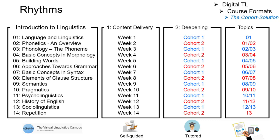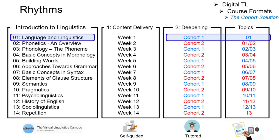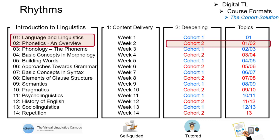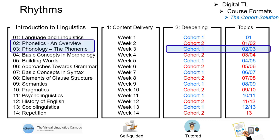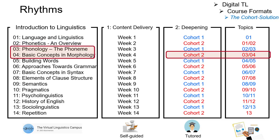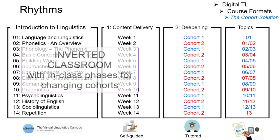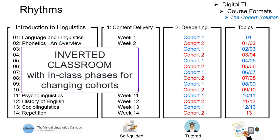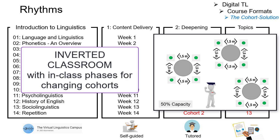For example, in week 1 for the first cohort, content from the first course unit; in week 2 for the second cohort, content from the first and second course unit, and so on. Thus, the corona solution of the inverted classroom is a reduced in-class phase where alternating cohorts in weekly intervals deepen the content, reducing the occupation of the classroom to a maximum of 50%.